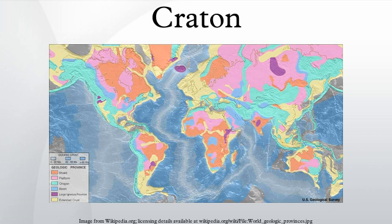Cratons are subdivided geographically into geologic provinces. A geologic province is a spatial entity with common geologic attributes. A province may include a single dominant structural element such as a structural basin or a fold belt, or a number of contiguous related elements. Adjoining provinces may appear similar in structure but be considered separate due to differing histories.